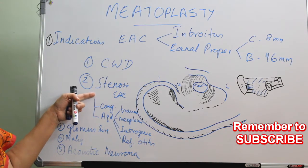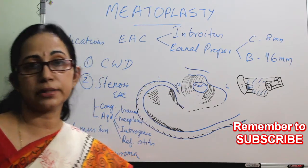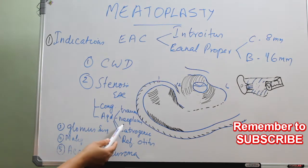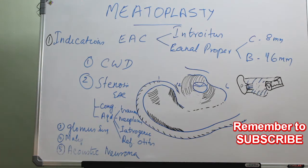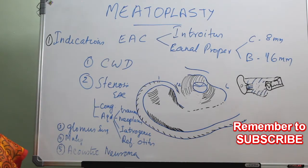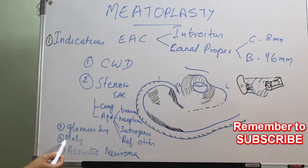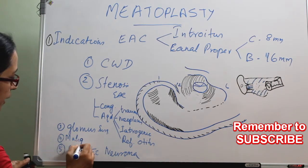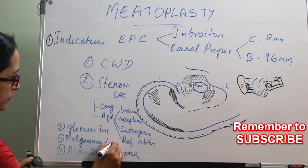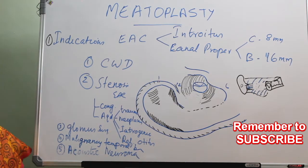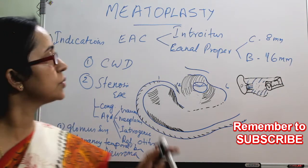That is the need for meatoplasty in a canal wall down procedure — to enlarge the external auditory canal, inspect the mastoid bowl each time, and allow epithelialization into the mastoid bowl. The second indication is stenosis of the external auditory canal, which can be congenital or acquired — due to trauma, neoplasms of the temporal bone, or external canal — or iatrogenic. Meatoplasty is also done as part of surgeries for tumors, temporal bone malignancy, and acoustic neuroma.